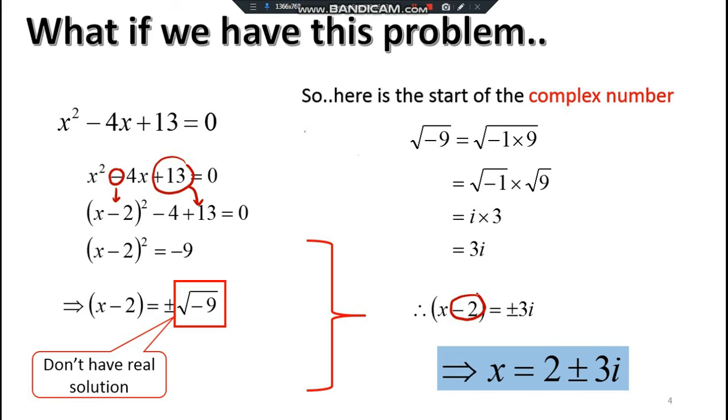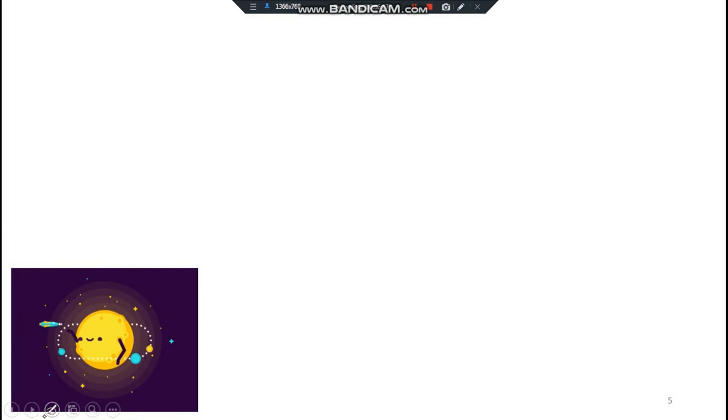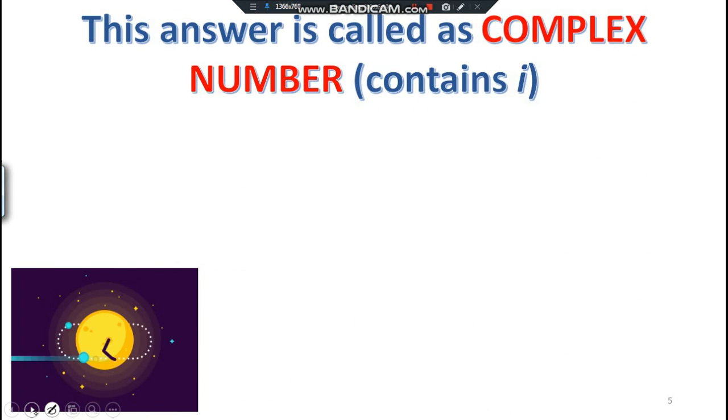In conclusion, every complex number should have a non-real number. The part without i we call the real part. The part with i we call the imaginary part.